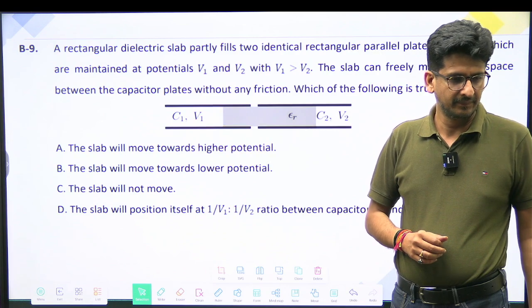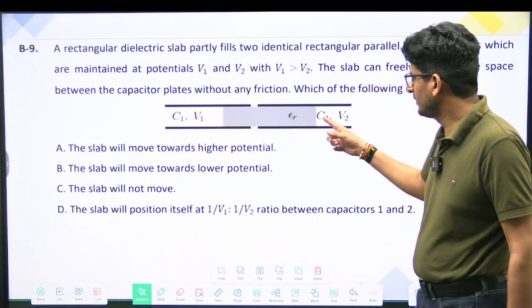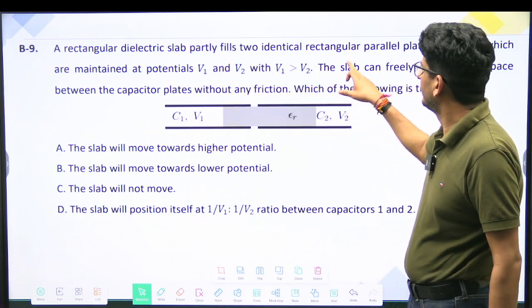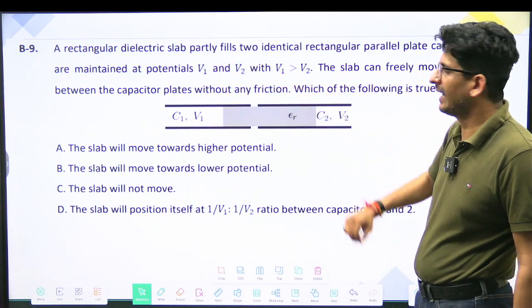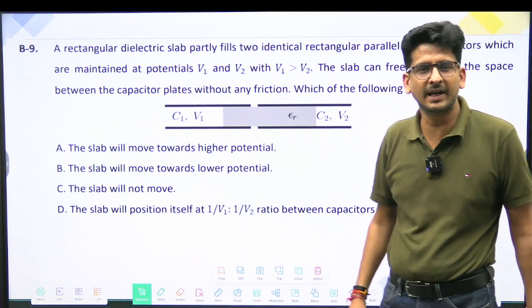So E1 will be equal to V1 by D and E2 will be equal to V2 by D. And it is given that the capacitors are identical, so that means the distance between the plates of the capacitor is the same.